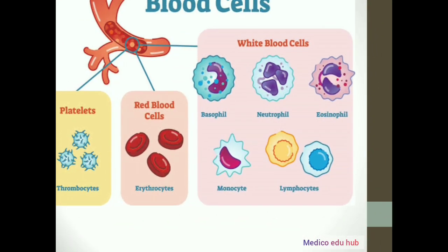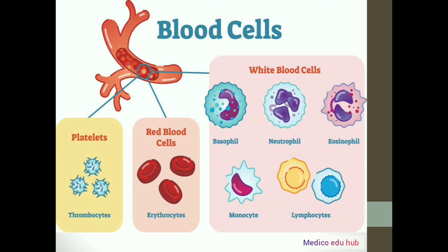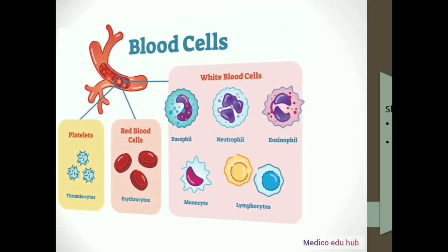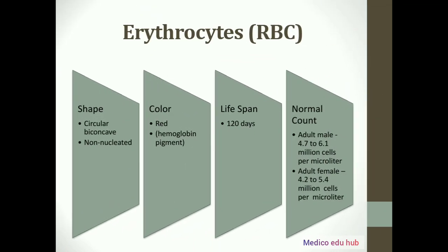The blood cells form 45% of the blood. These are RBC, WBC, and platelets. We will now learn a brief overview of all these cells individually. Firstly, we will start with erythrocytes, which are commonly known as RBCs.